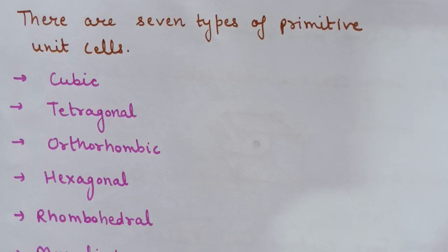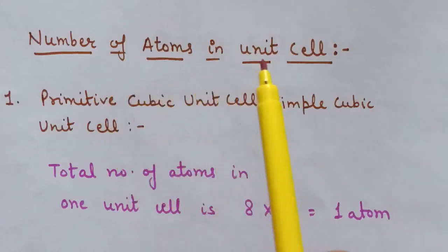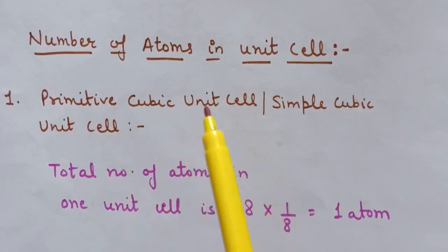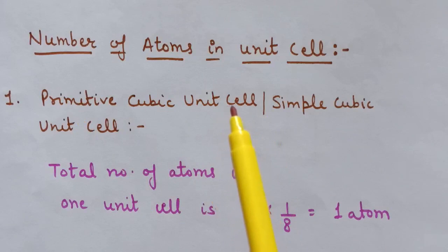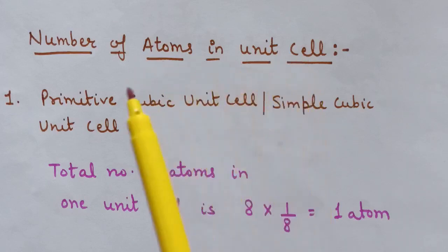Any crystal lattice is made up of a large number of unit cells and every lattice point is occupied by one constituent particle — it may be an atom, molecule, or ion. Let us work out what portion of each particle belongs to a particular unit cell. We shall consider three types of unit cells, assuming the constituent particle is an atom. The next topic is: number of atoms in a unit cell.